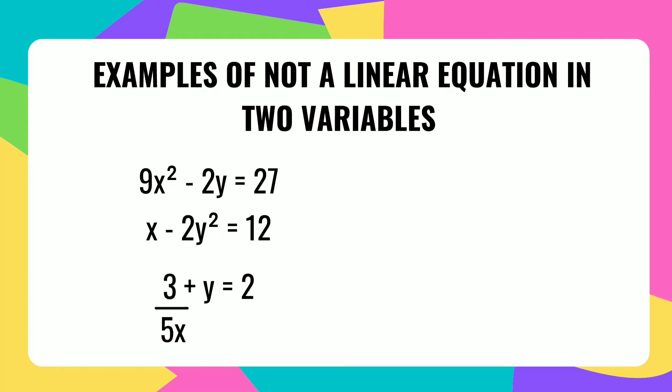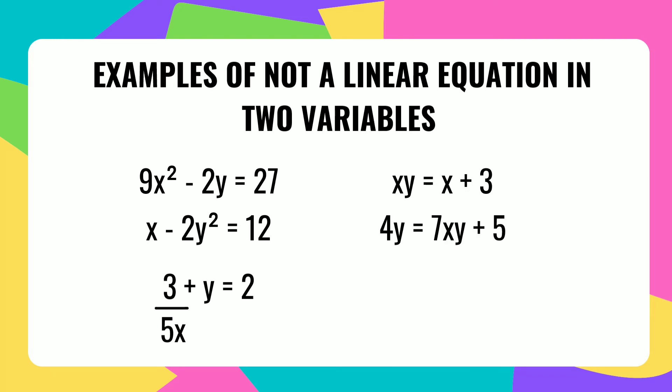3 over 5x plus y equals 2 is not a linear equation in two variables because there is a variable in the denominator. xy equals x plus 3 and 4y equals 7xy plus 5 are also not linear equations in two variables because there are two variables that are part of the same term.